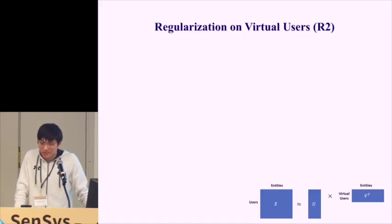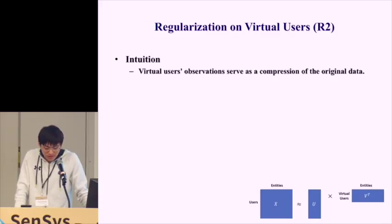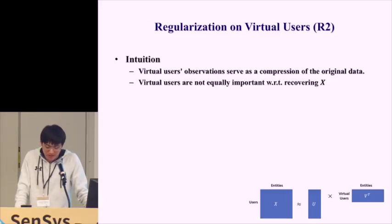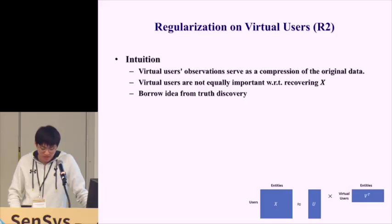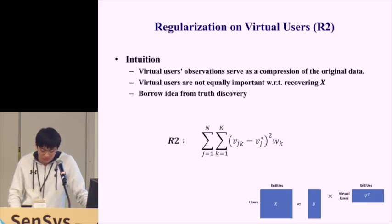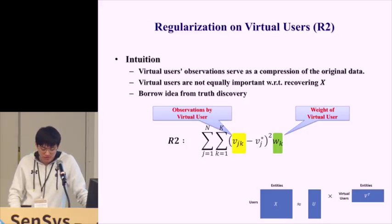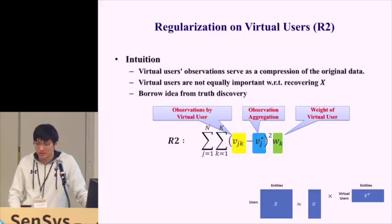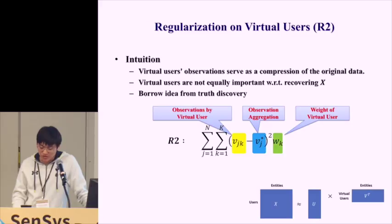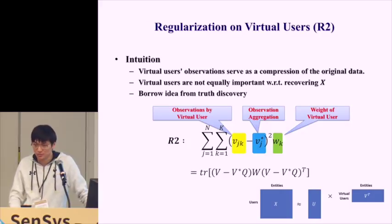We also adopt a regularization on virtual users, because virtual users' observations are a compression of the original data and are not equally important for recovering observation matrix X. Borrowing from truth discovery, W_k represents the reliability or weight of virtual user k, V_jk represents observations by virtual user k towards entity j, and V* represents the aggregated observation. This term forces that if a virtual user has a higher weight W, its observations should comply with the aggregated one, and vice versa. This can also be transformed into matrix form.